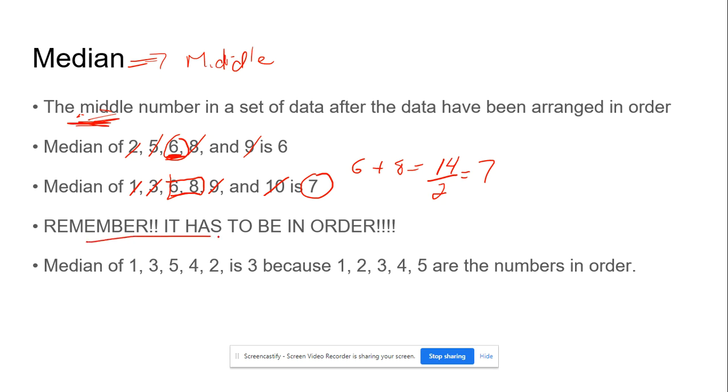Remember that it has to be in order. When we take the median of 1, 3, 5, 4, and 2, we cannot say that it's 5 just because it's in the middle. We have to put it in order. So it goes 1, 2, 3, 4, 5. If we cancel out the first two and last two, we're left with 3 as the middle number.